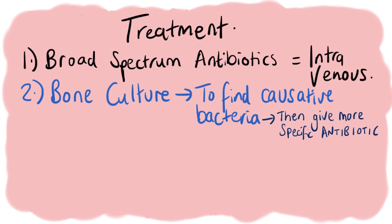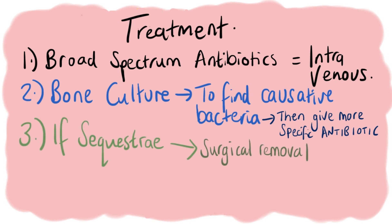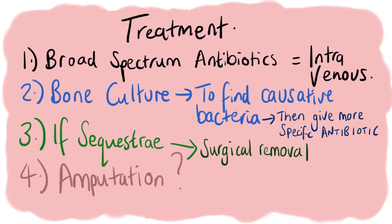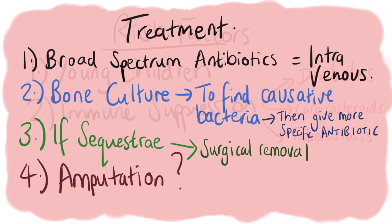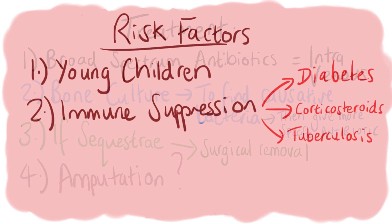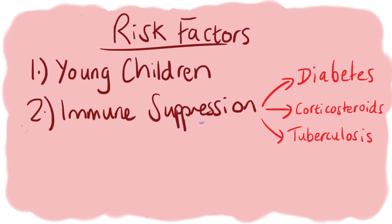In chronic cases where there is necrotic sequestration, surgery needs to be done to remove it, debride, and remove any further infected bone. In cases where there is no remission of the infection or if treatment was neglected for a very long time, amputation may also be performed.